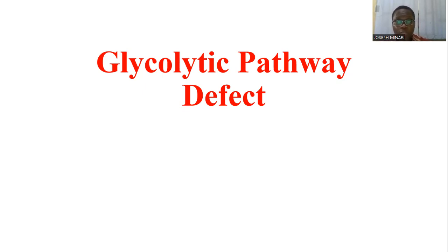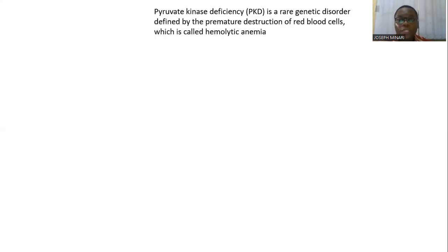Welcome to this channel where we discuss some disorders and diseases of some pathways and we look at some molecular basis of these disorders. Today we want to look at the glycolytic pathway defect, and we are looking at a typical example — what we call pyruvate kinase deficiency, PKD.